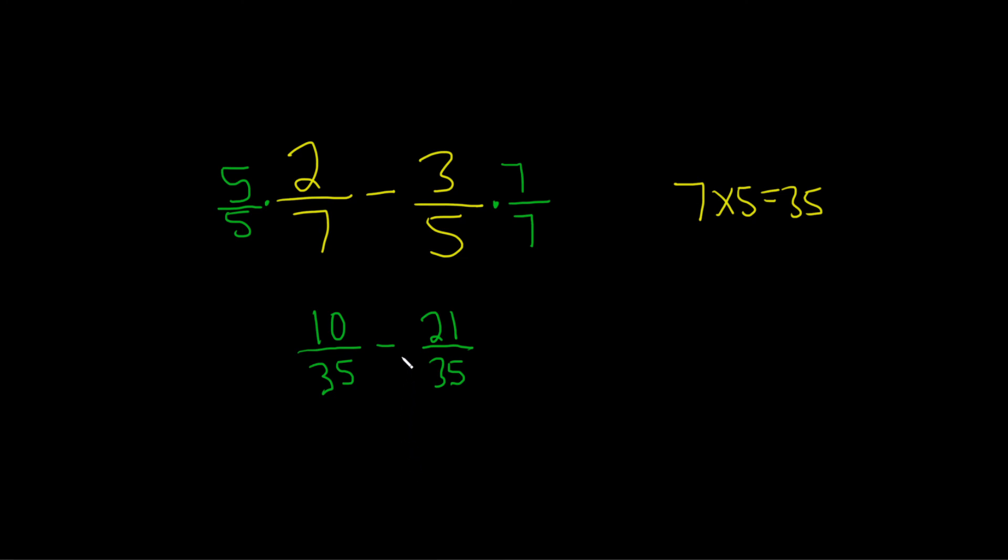And now you can subtract because you have the same denominator. So you just do 10 minus 21. That's negative 11, and then the 35 hangs out on the bottom.